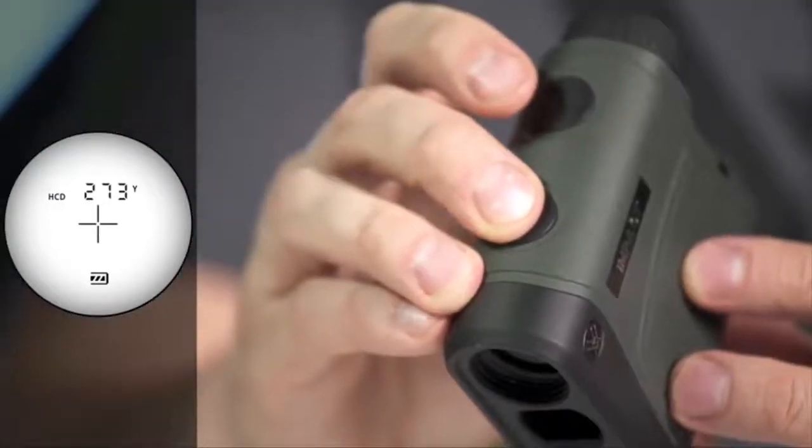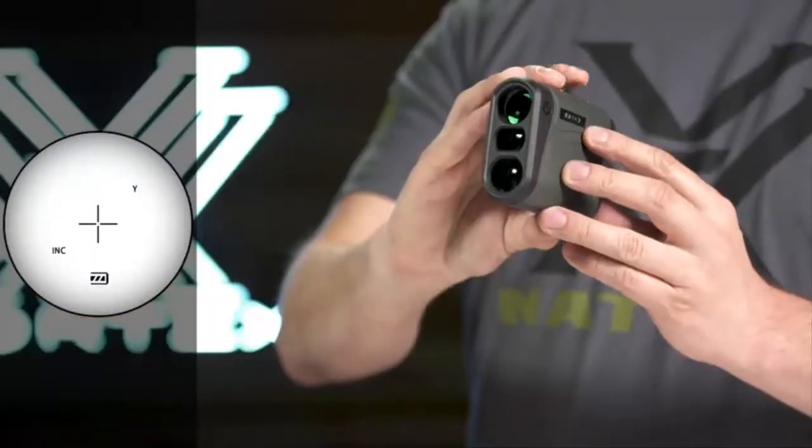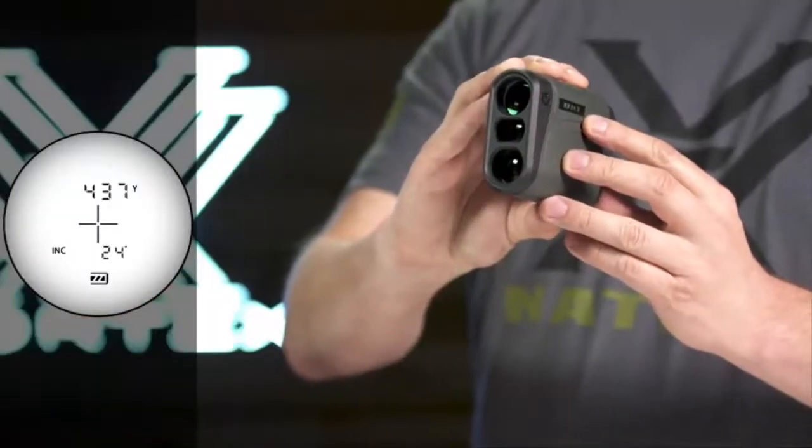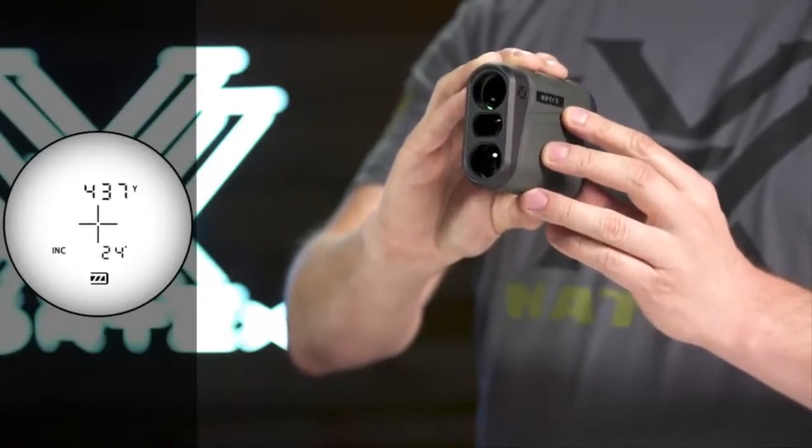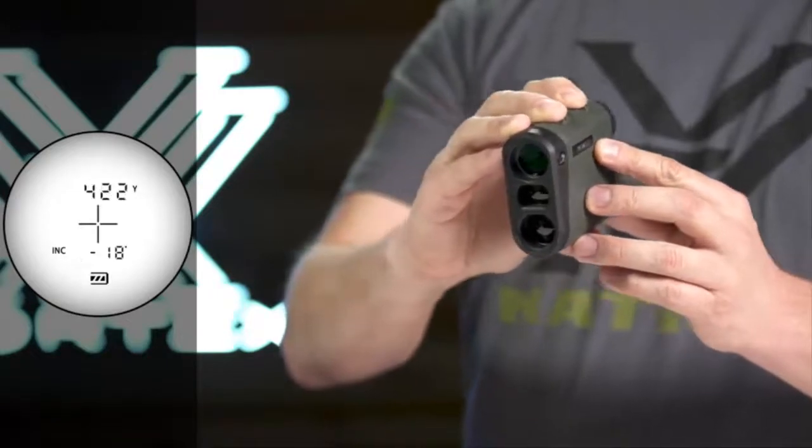A scan feature gives continuous range readings to pan across a landscape or track a moving target. All modes can be set to read in yards or meters. The Impact runs on a common CR2 battery and the battery life indicator is always visible in the display.